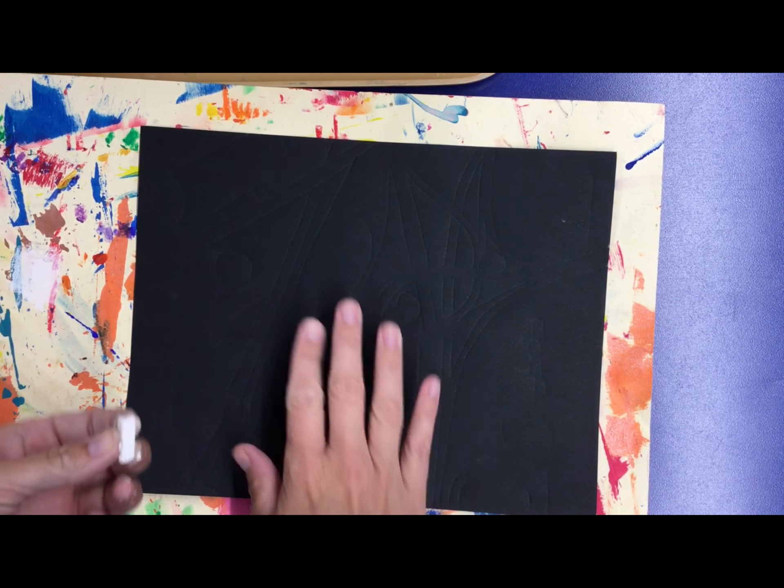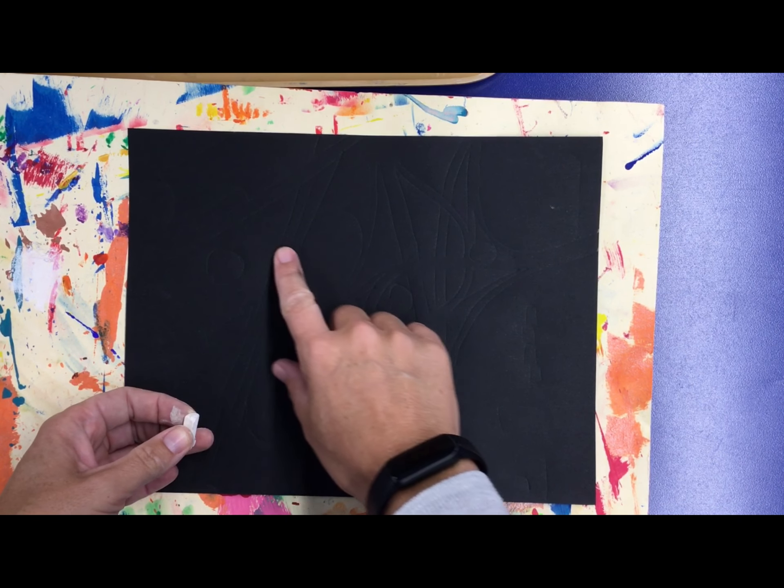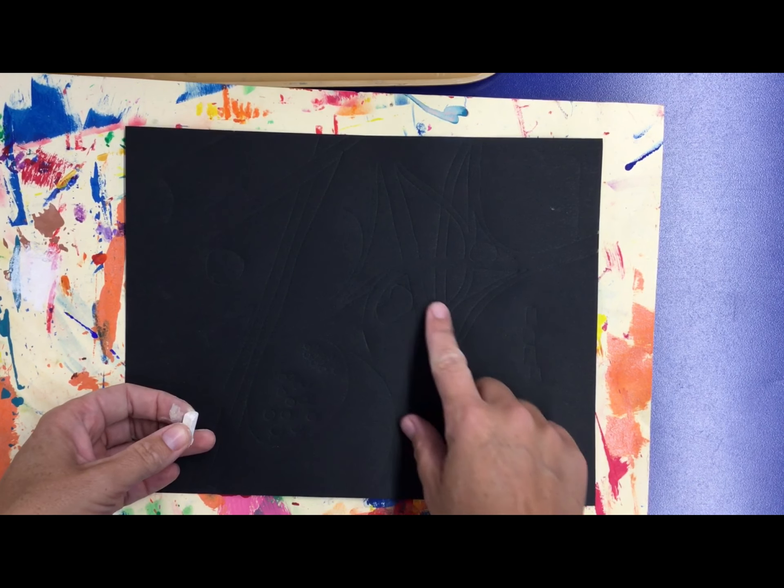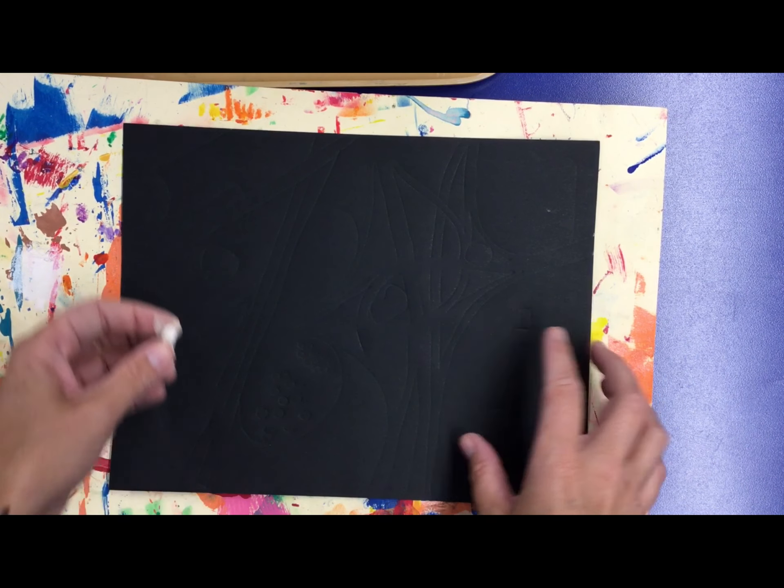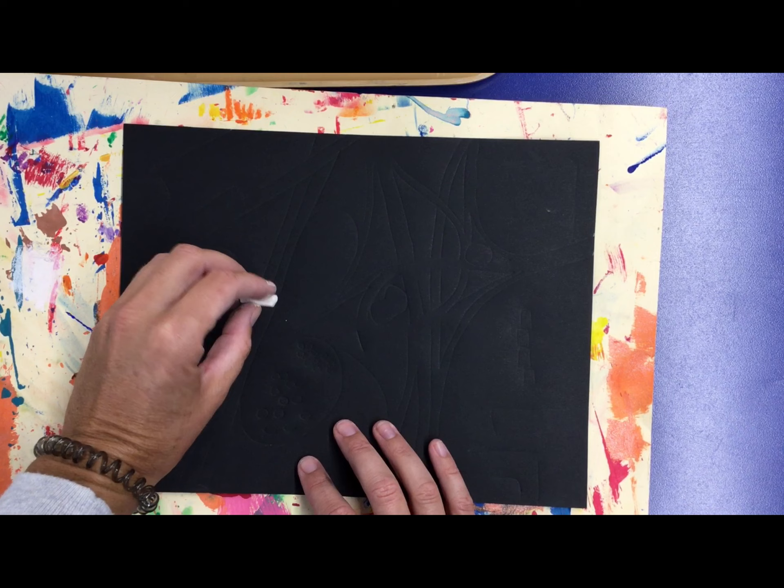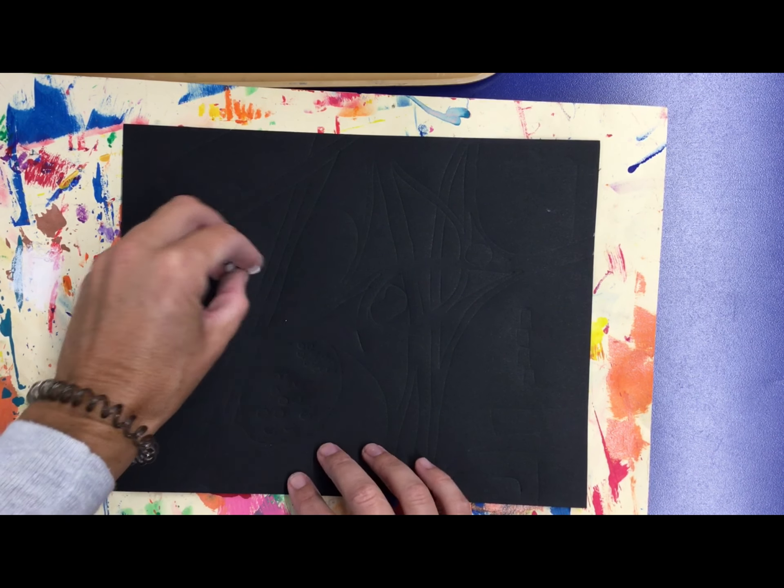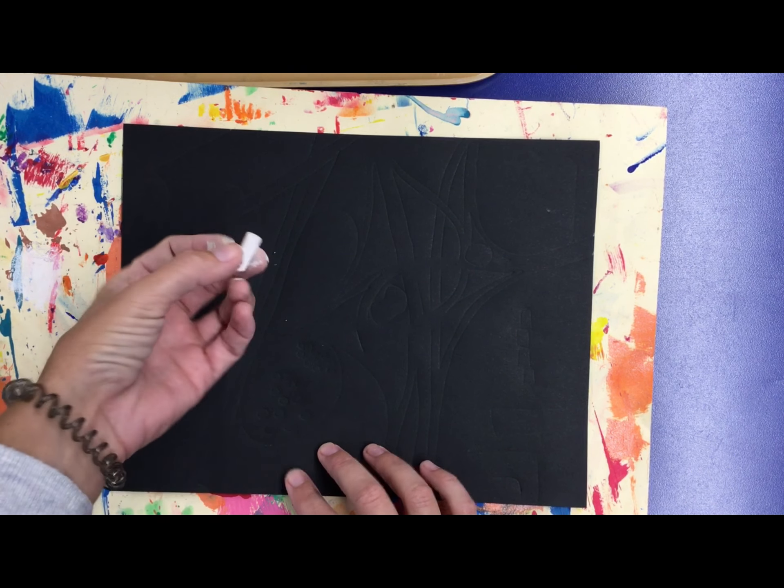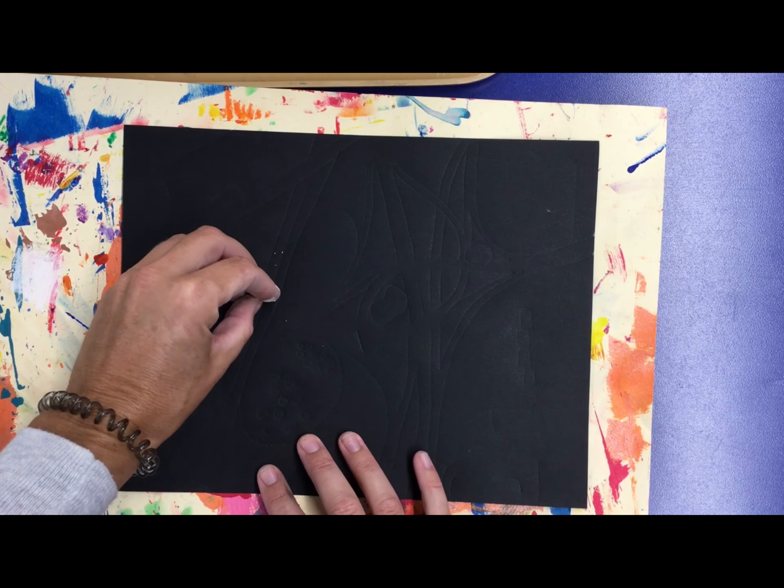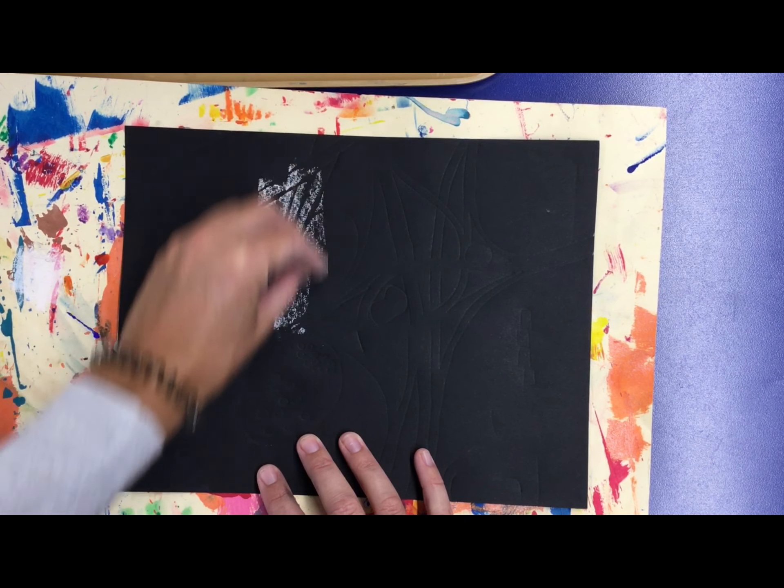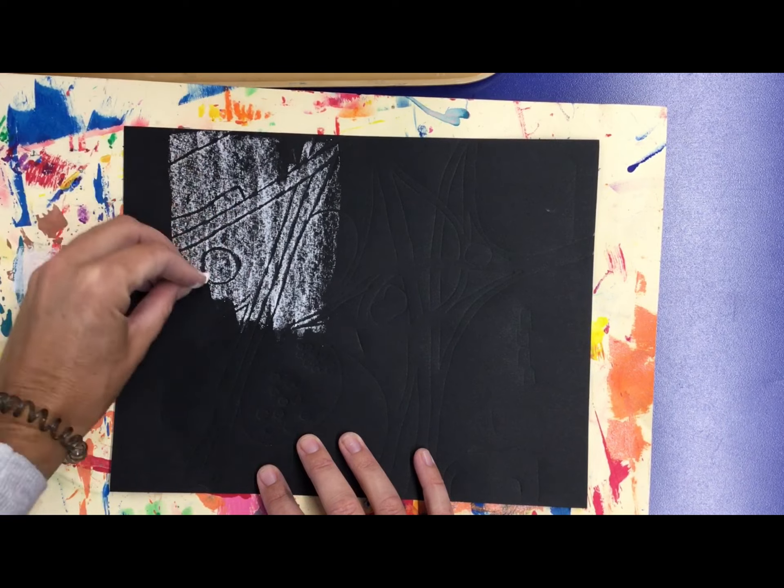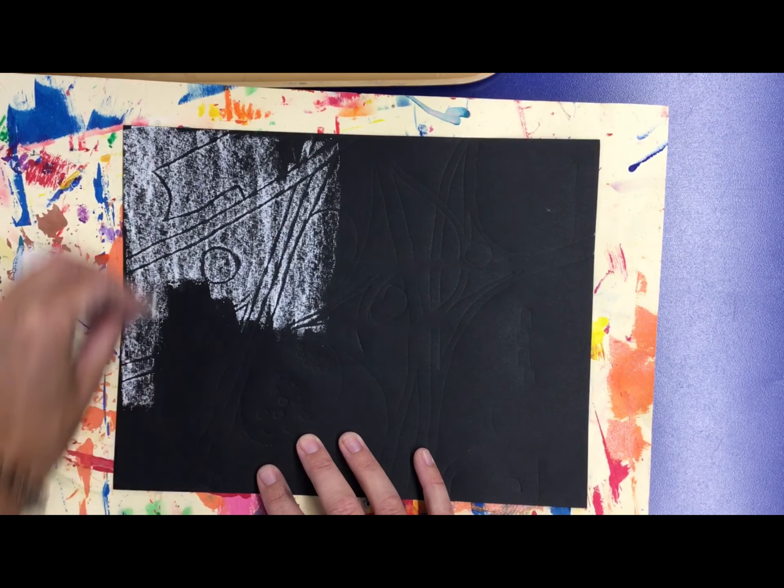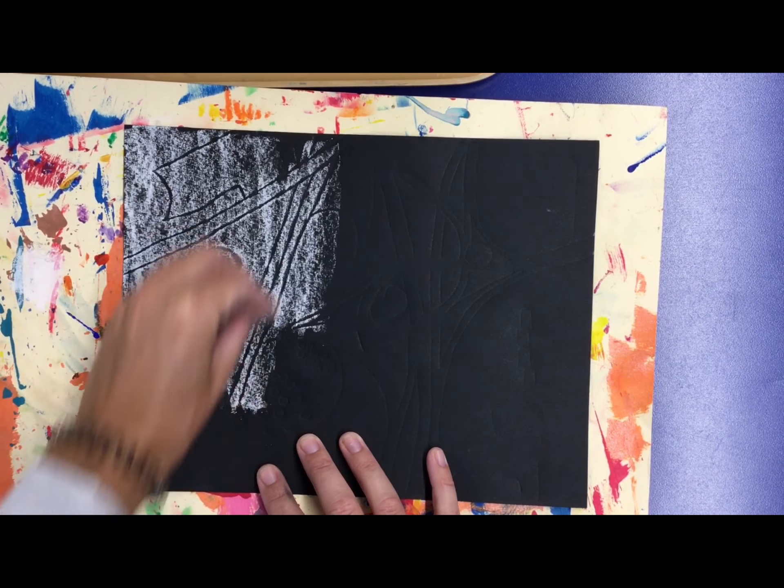Okay, we're on this side that has the image pushed down. This is debossed. I'm going to take the pastel on its side, so I'm not coloring with it like normal. Laying it down flat, and then I'm just gently pressing it across the whole surface. You want to make it even.